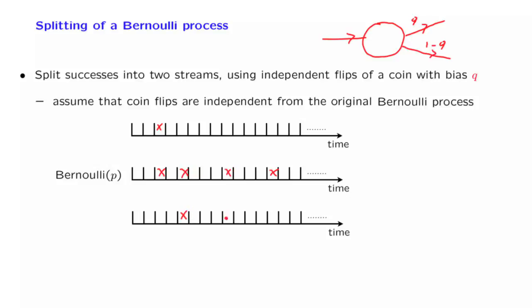So one possible outcome of the experiment might be this one, where these two arrivals were sent to this stream, and these two arrivals were sent to the top stream. And we have these probabilities Q and 1 minus Q of sending the arrivals to one or the other stream.